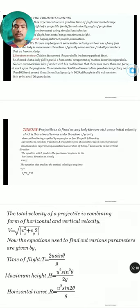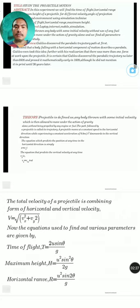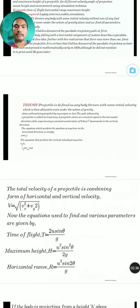It is said that Galileo discovered the parabolic trajectory later than section 8 and proved it mathematically in section 9, though he did not mention it in print in front of or in personalized letter.